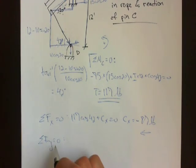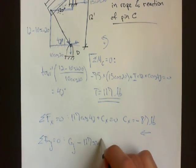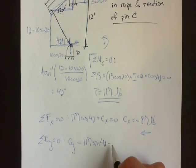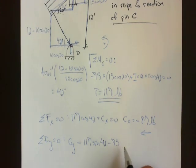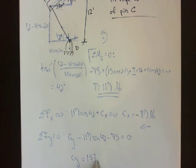And now we sum the forces in the Y. So we have our CY minus 117 sine 42 minus 75 equals 0. So CY equals 153 pounds.